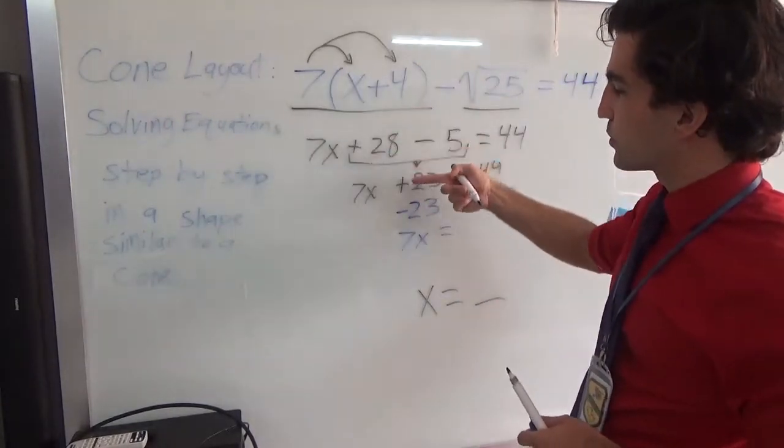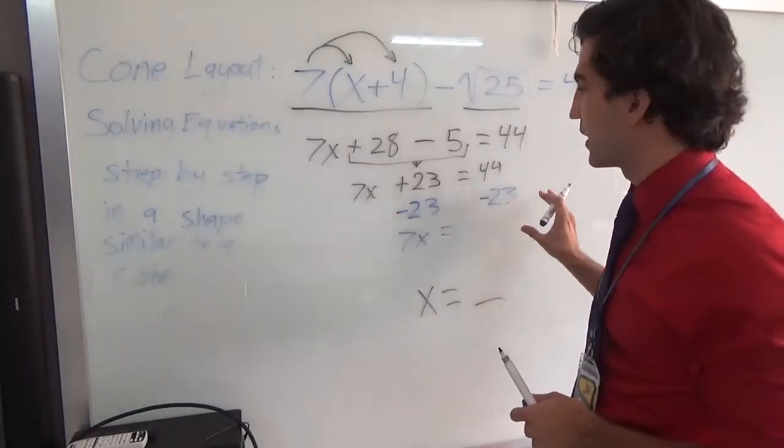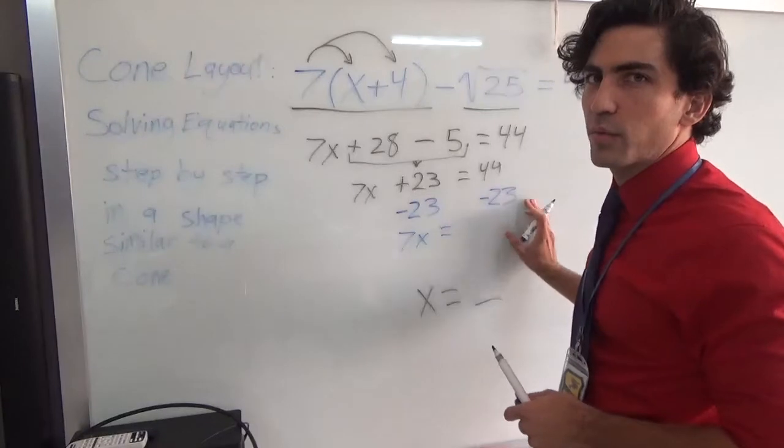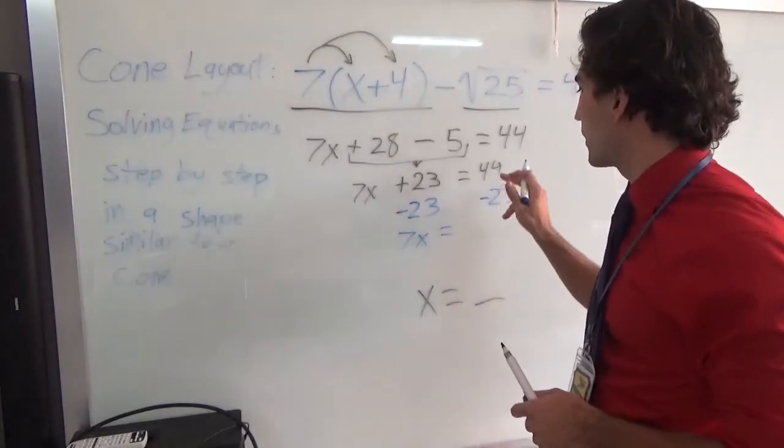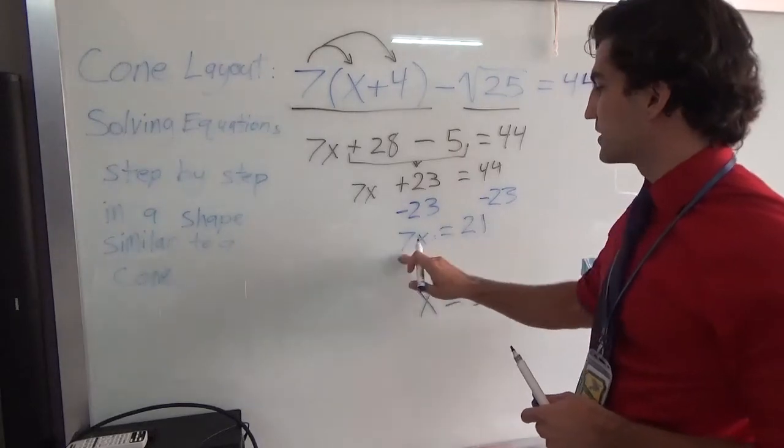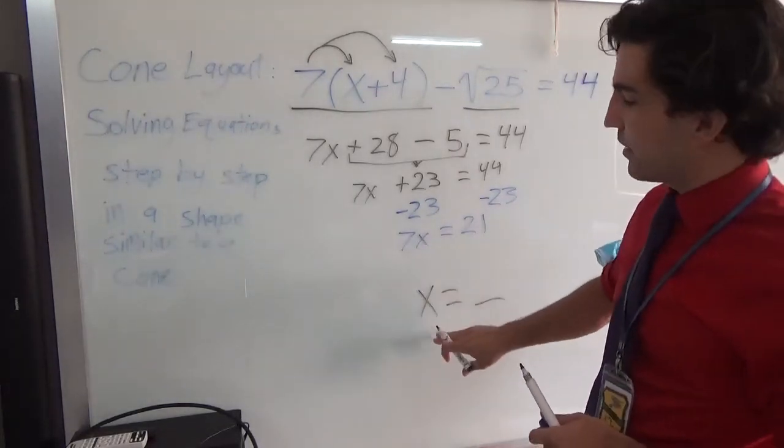We have 7x equals... As you can see, each time I do it, I'm just bringing things down. And I'm rewriting the whole thing. 7x equals 44 minus 23. We can figure that out. Now, we have 21. 7x equals 21. Now, I want to get x by itself. That's our goal.